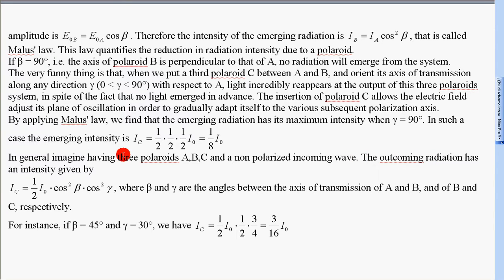The outcoming radiation has an intensity given by Ic equal to 1/2 I0 times cos²beta times cos²gamma, where beta and gamma are the angles between the axis of transmission of A and B and of B and C, respectively.